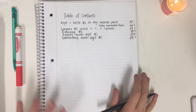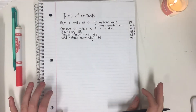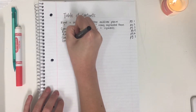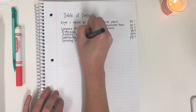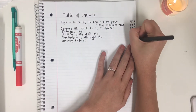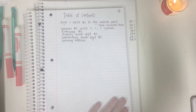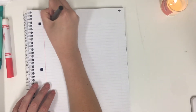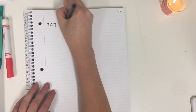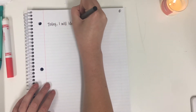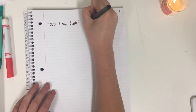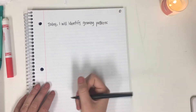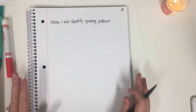Okay class, today we're going to be moving on from place value and subtracting numbers and we're going to be looking at patterns. Today specifically we're going to look at growing patterns — patterns that continue to grow and move. That is going to be page 8. I'm on page 8 and I'm going to write my objective: today I will identify growing patterns.